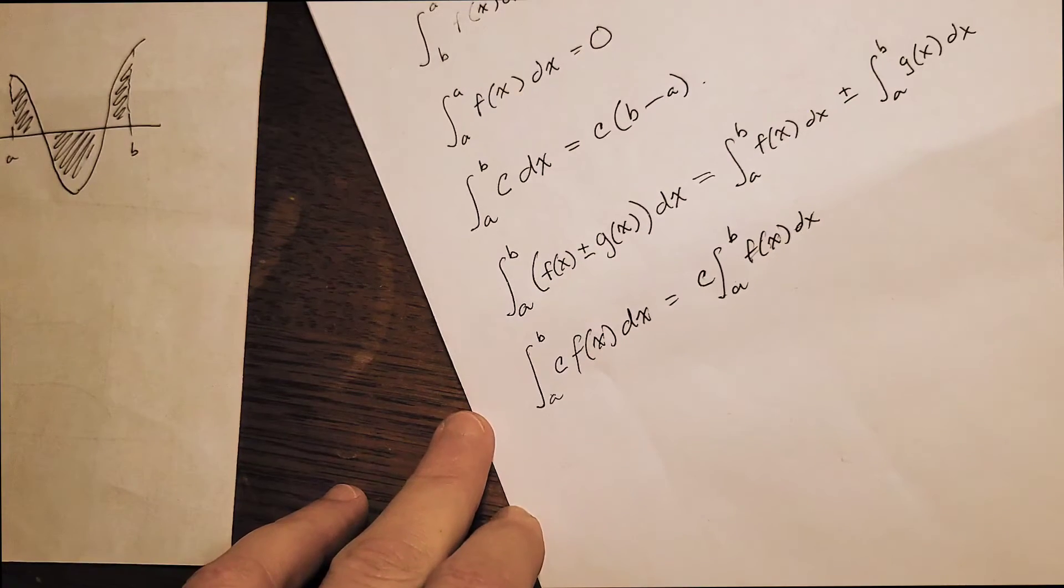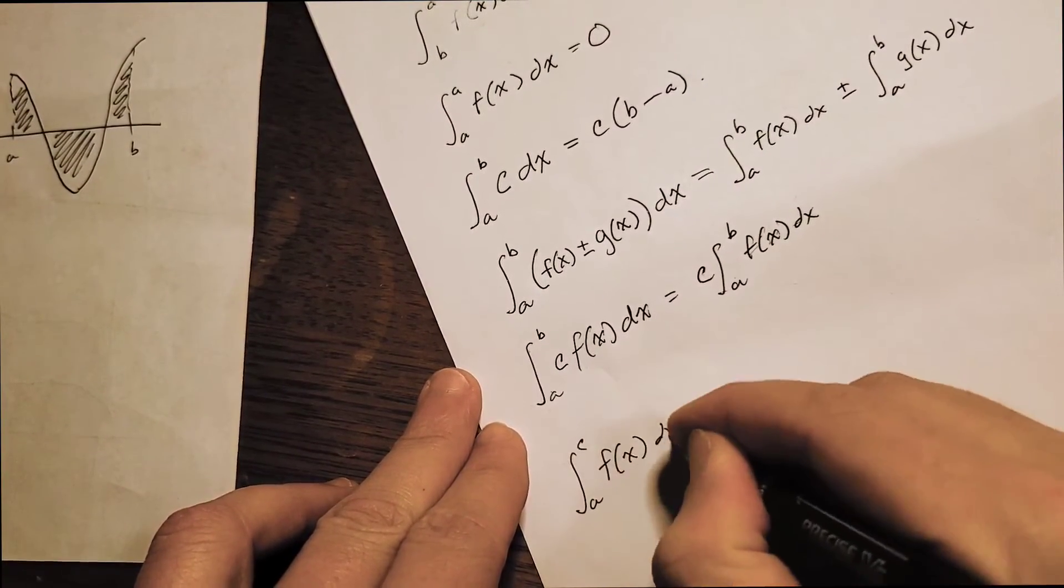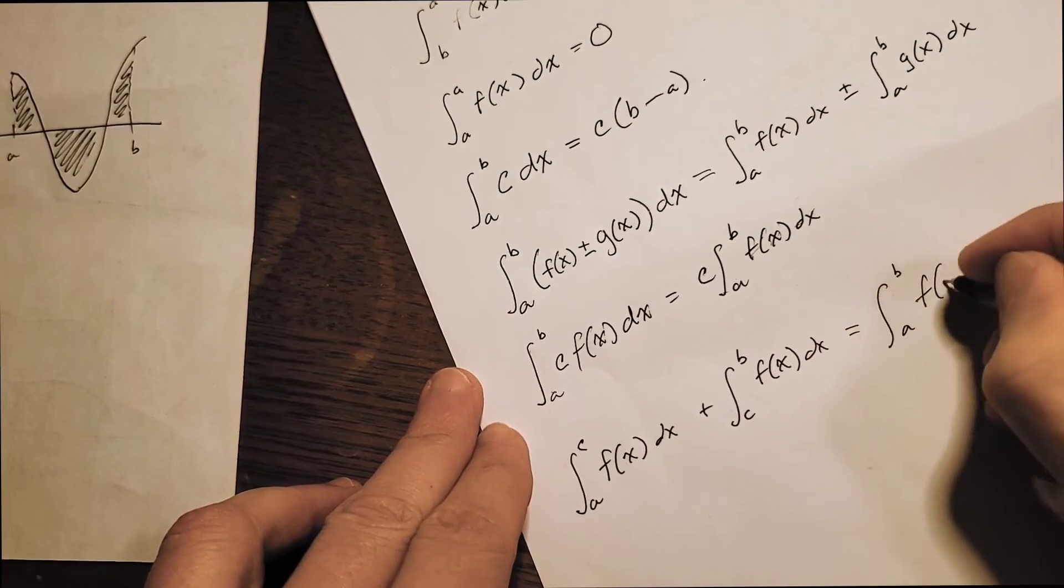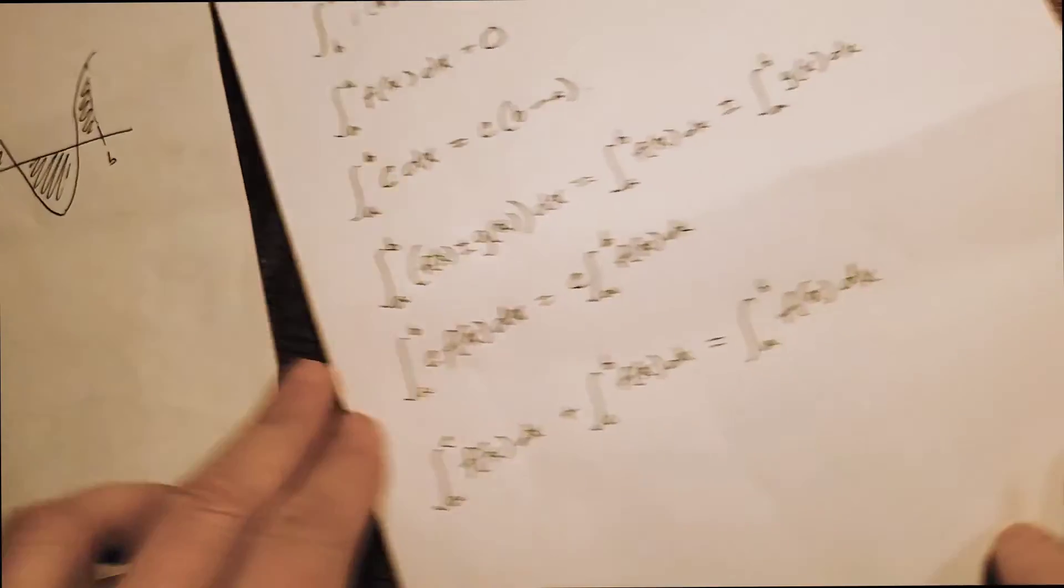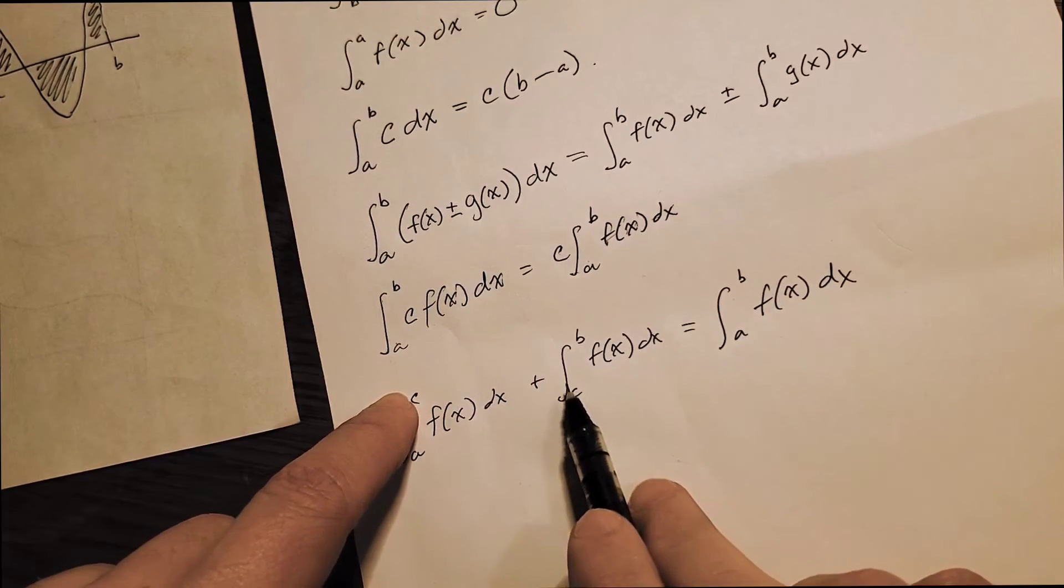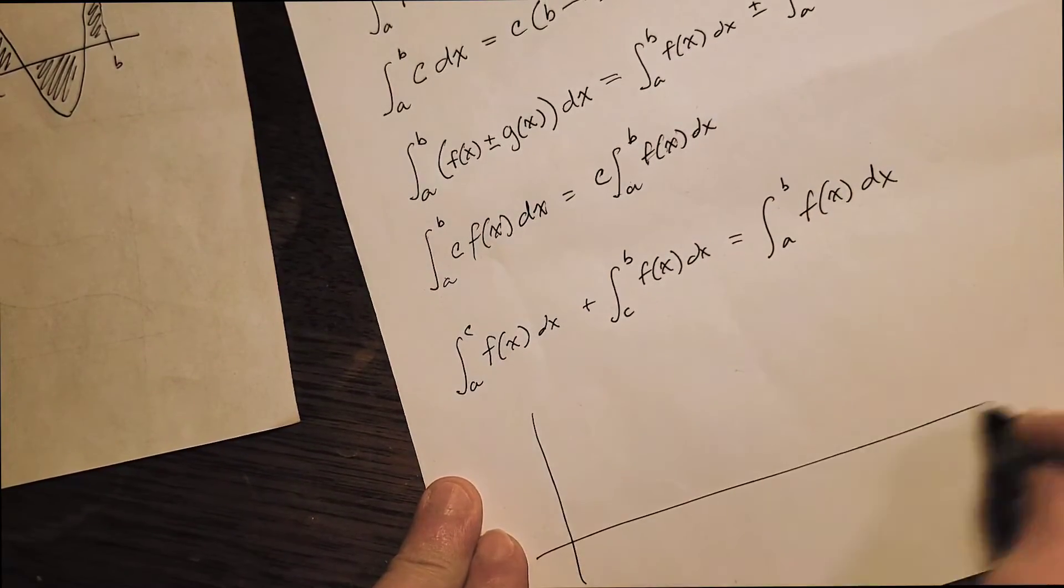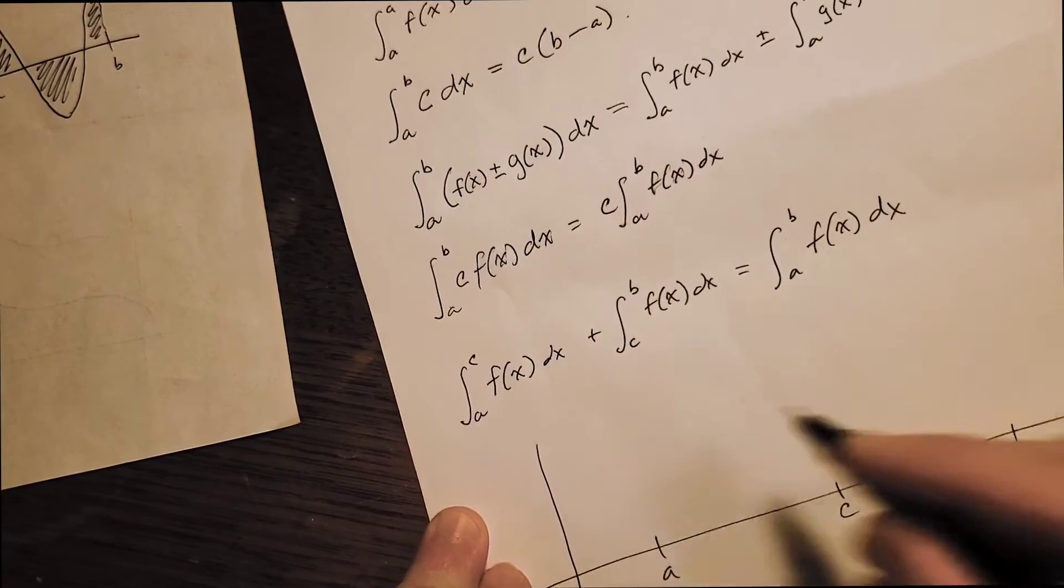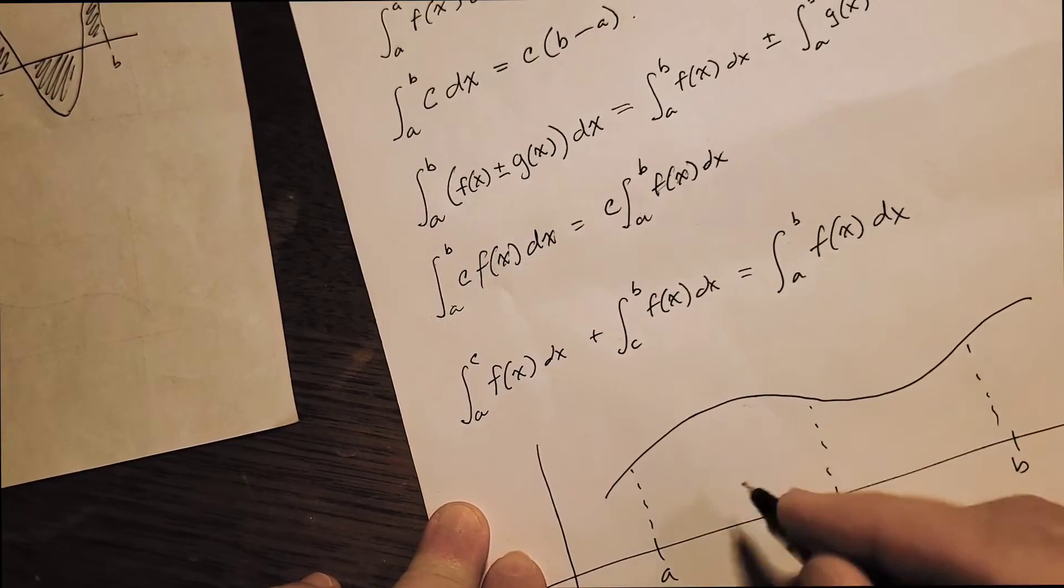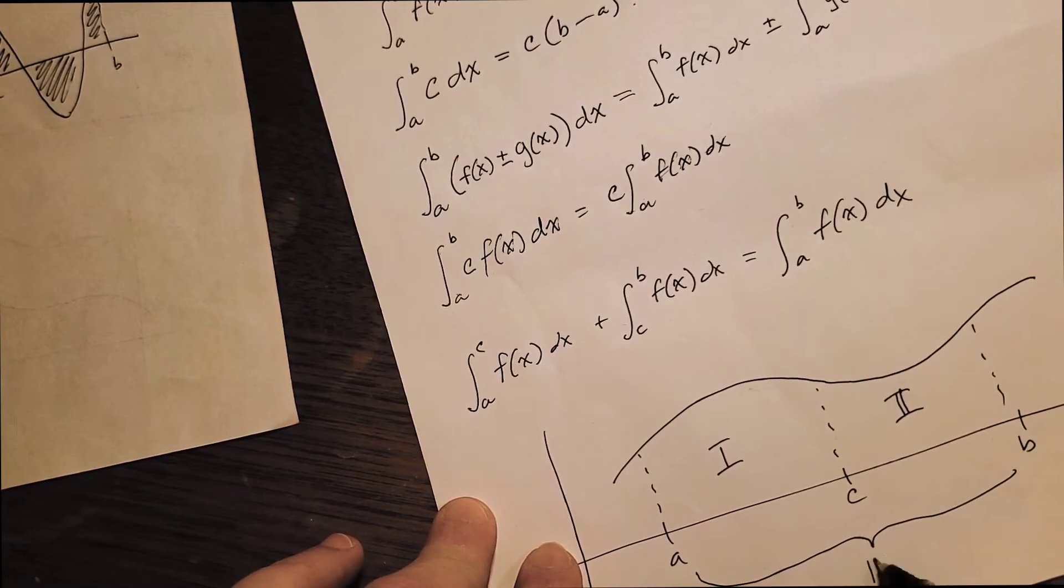And the final property that we're going to talk about in this video looks like this. Integral from A to C of f(x) dx plus integral from C to B of f(x) dx is equal to integral from A to B of f(x) dx. So notice what happens here. We have these two limits of integration are the same, the upper limit from one, the lower limit from the other. We can remove this one and just end up with one big integral. The easiest way to see this is when c is between a and b. So here's my function f. So I'm just going to imagine dividing this into two regions. Let's call this region one, this region two, and then the whole thing will be region three.